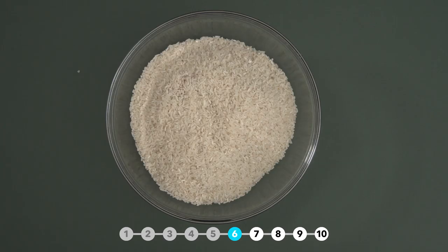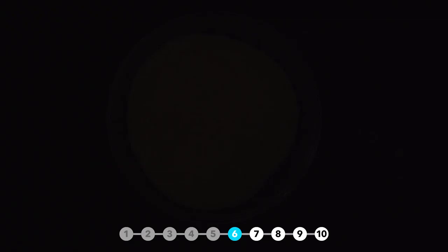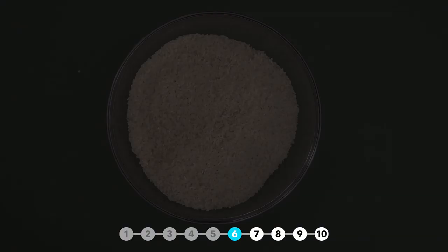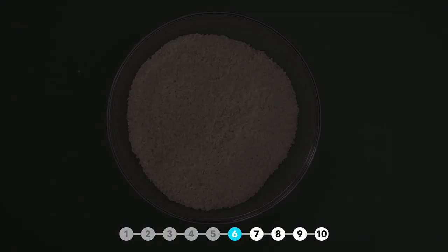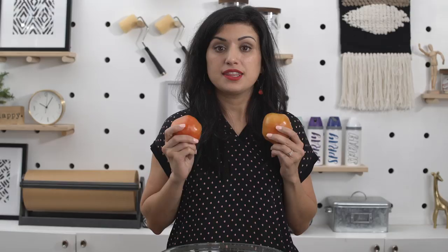Completely cover unripened fruits with uncooked rice. Uncooked rice traps ethylene gas, which ripens fruits. These two tomatoes were the exact same color just 24 hours ago.